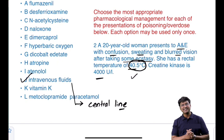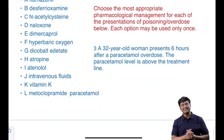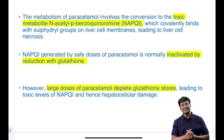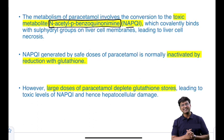A 32-year-old woman presents six hours after paracetamol overdose; the paracetamol level is above the treatment line. The drug of choice for paracetamol poisoning is N-acetylcysteine. When paracetamol is consumed, it is converted to a toxic metabolite — N-acetyl-p-benzoquinoneimine (NAPQI) — which is normally detoxified by glutathione. This toxic metabolite causes liver cell necrosis.